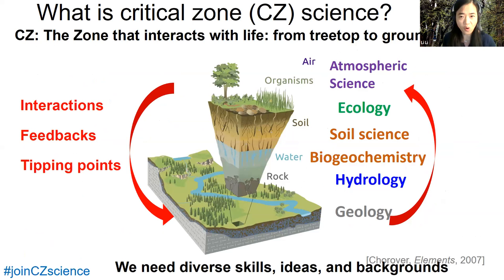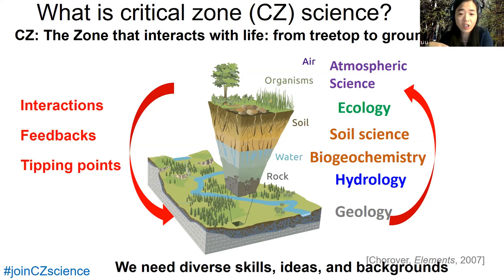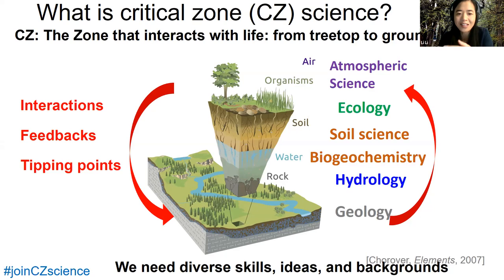What is critical zone and what is critical zone science? Some of you have attended earlier spring seminar series and probably know more of this. Critical zone science is defined as a zone of Earth's surface that interacts with life — the zone from the treetop to groundwater that sustains life. Traditionally, scientists have been working within disciplinary boundaries: atmospheric science, ecology, soil science, asking questions within that science domain.